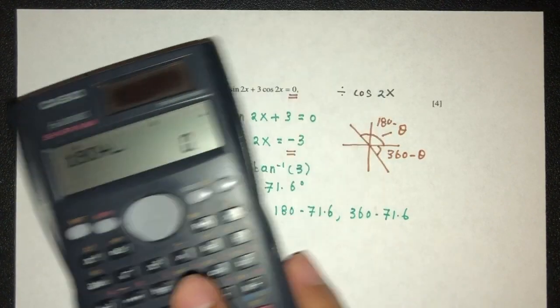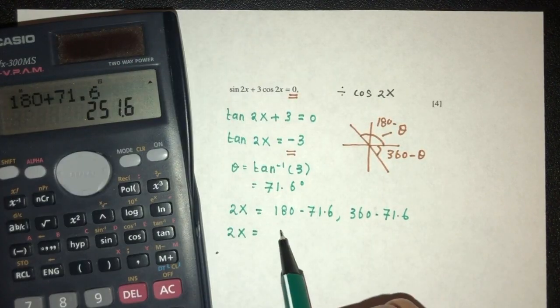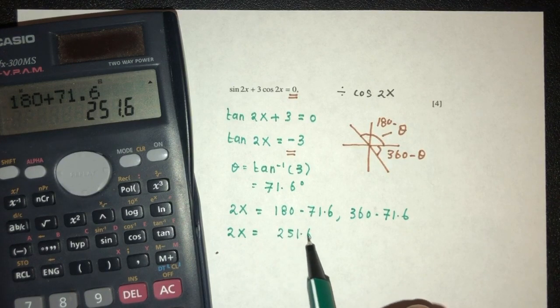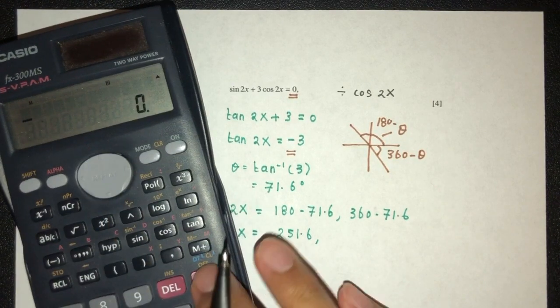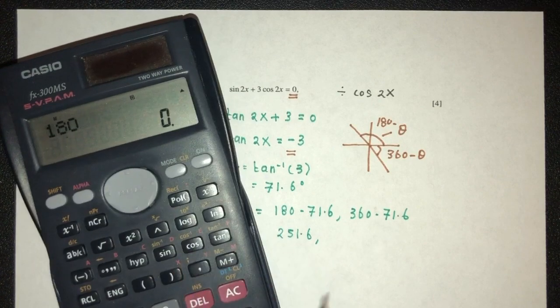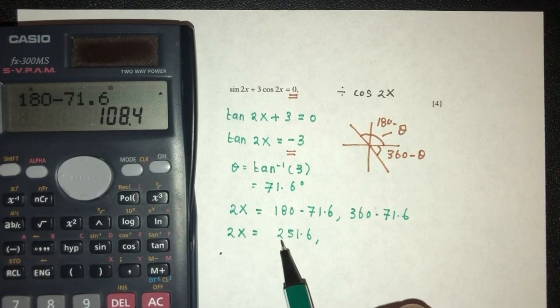So 180 plus 71.6, that will be 251.6. So I guess I typed something wrong. That should be 108. My apologies, 108.4.